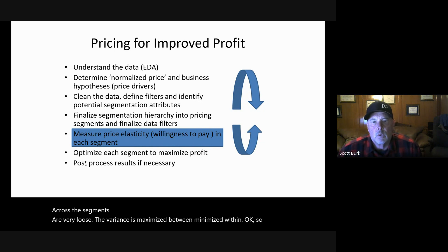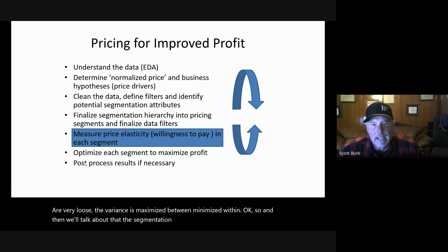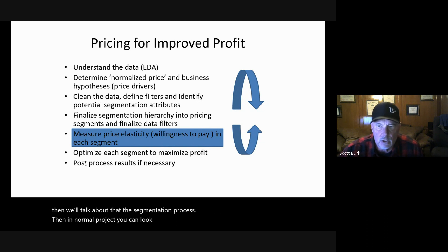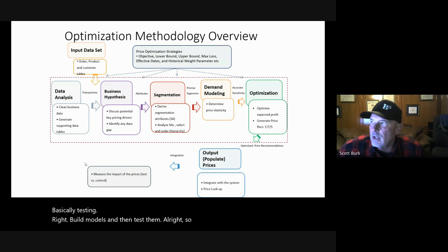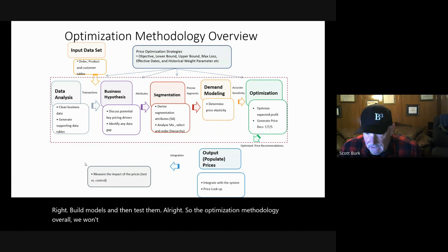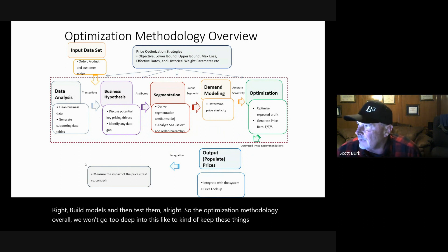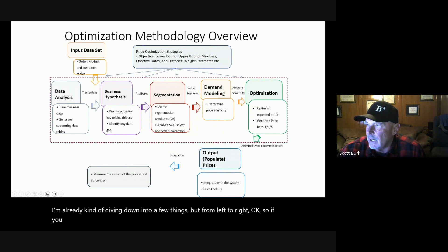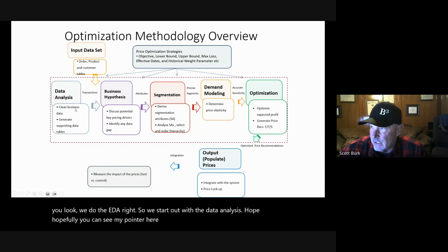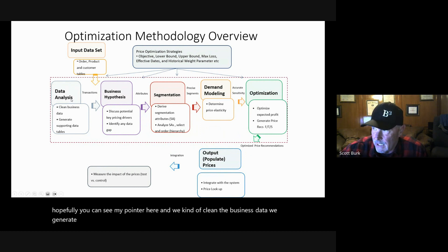In a normal project, you look at the post-process results — basically testing. You build models and then test them. So the optimization methodology, from left to right: we do the EDA first. We start with data analysis, clean the business data, generate supporting data tables, and create the data infrastructure to support what we want to do.